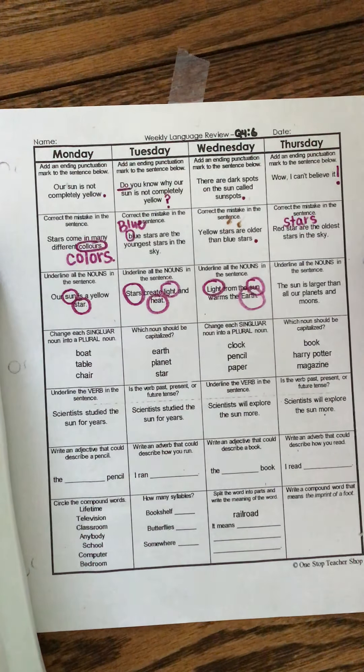Change each singular noun into a plural noun. Clock, pencil, paper. One clock, two clocks. Remember guys singular means one and plural means more than one. Pencil. One pencil, two pencils. Paper. One paper, two papers. And make sure that you're looking at the end of the word. Sometimes you'll add an S or an ES or if there's a Y you'll drop the Y and add IES. But all of these needed S's.